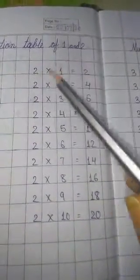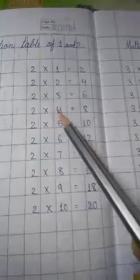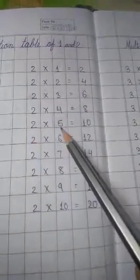Now, look the multiplication table of 2. 2×1 is 2. 2×2 is 4. 2×3 is 6. 2×4 is 8. 2×5 is 10.